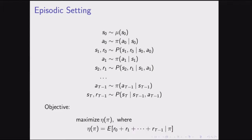In the episodic MDP: first sample the initial state from mu, then sample the first action a_0 from the policy, then sample the next state and reward from the transition distribution, and so on until reaching terminal state S_t. The quantity we care about is the sum of all rewards r_0 + r_1 + ... + r_{t-1}, and eta(pi) is defined as the expected total reward of the policy pi.